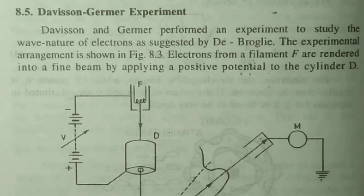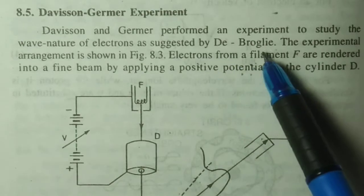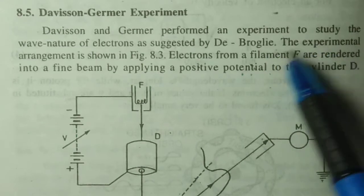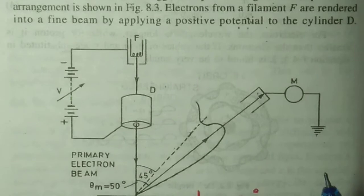Hello everyone, welcome to my channel Learning Institute. Today I'm going to discuss the very famous experiment to show the electron's wave nature - the Davisson and Germer experiment. This experiment was performed to study the wave nature of electrons as suggested by de Broglie, and the experimental arrangement is shown in the figure.